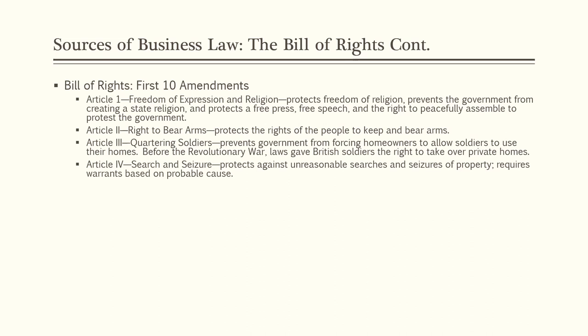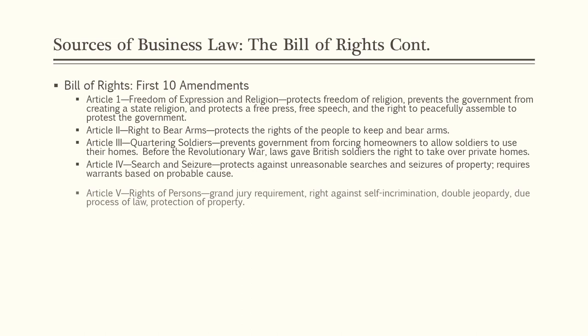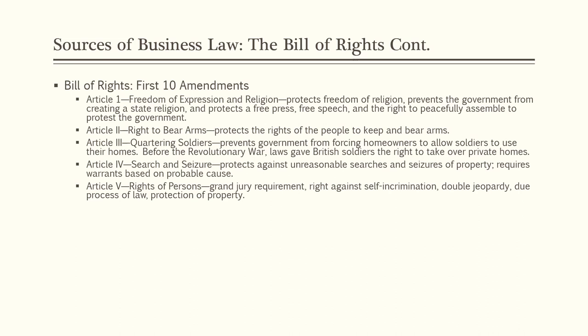The Fourth Amendment covers search and seizure — it protects against unreasonable searches and seizures of property and requires warrants based on probable cause. The Fifth Amendment covers the rights of persons in criminal trials: the right to a grand jury, the right against self-incrimination, protections from double jeopardy — meaning you can't be tried twice for the same offense — the right to due process of law, and protection of property without just compensation. If you watch crime dramas and a witness says 'I take the fifth,' they are invoking their right against self-incrimination.